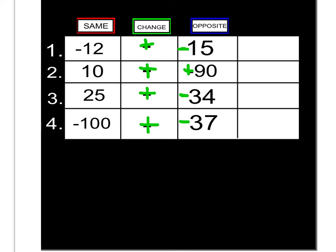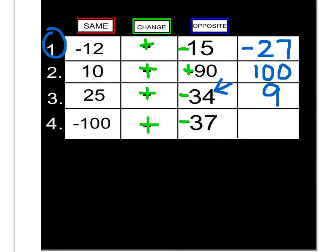Now I can use my addition rules to solve it. With the first one, I have negative 12 plus negative 15 — same sign, both negative, so I add them up: 12 plus 15 is 27, answer is negative 27. Number two, I have 10 plus positive 90 — two positives, I add them up, 100, answer is positive. Third one is 25 plus negative 34 — opposite signs, so I subtract: 34 minus 25 is 9. Negative 34 is the larger number, so my answer is negative 9.